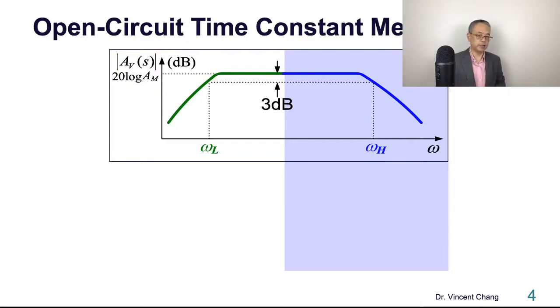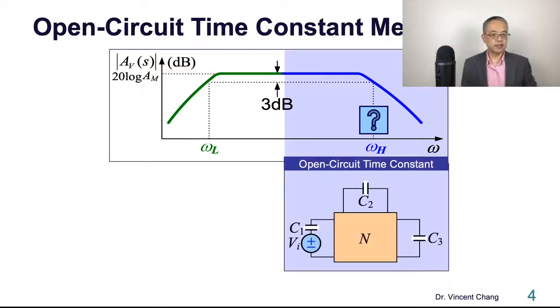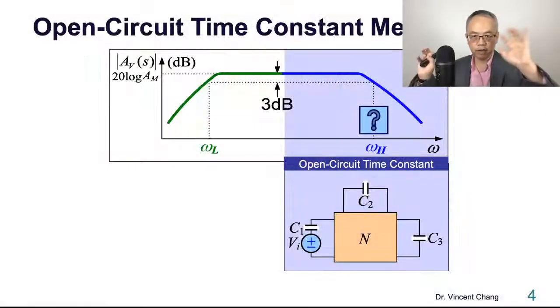So now at high frequency, if you want to estimate how far, how high the frequency can be pushed, how far the frequency can, the circuit can be operated, the limit, the upper three decibel cutoff frequency. If you want to have a quick estimation about omega H, then you can employ, you can borrow a very interesting and quick approximation method called open circuit time constant. Let me ask you, now you see three capacitors, right? Internal, external, external.